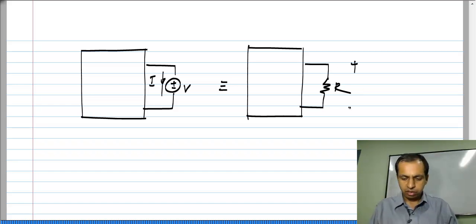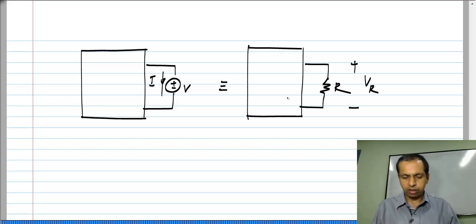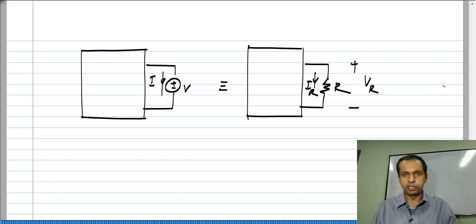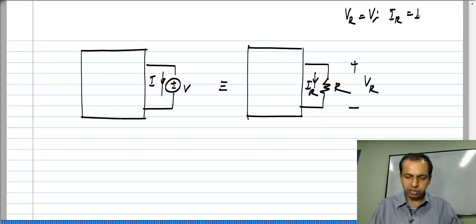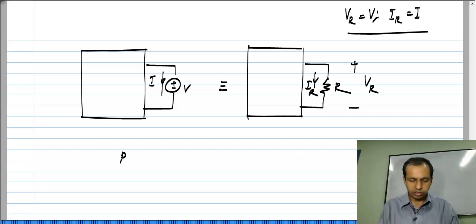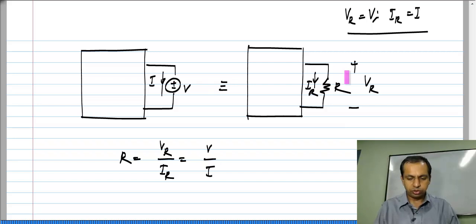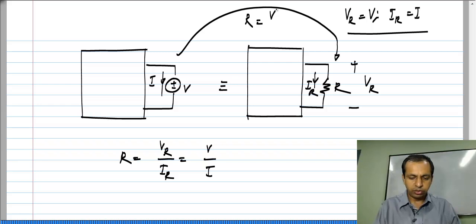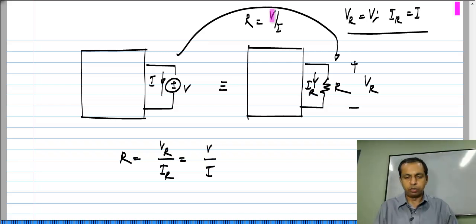What should this resistor be? Again, we want the voltage across the resistor V_R to be exactly the same as V and the current through the resistor I_R to be exactly the same as I. So V_R equals V and I_R equals I. The resistance value, which is V_R by I_R, has to be equal to V by I. So when I substitute a voltage source with a resistor, I have to substitute with the resistance whose value is V by I, where V is the value of the voltage source and I is the current through the voltage source with the appropriate passive sign convention.